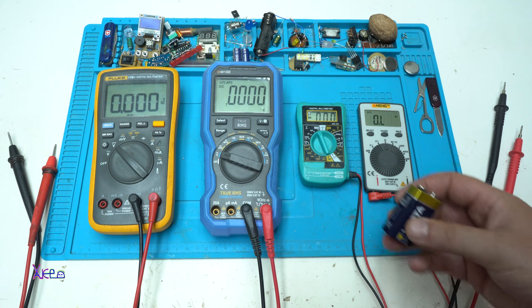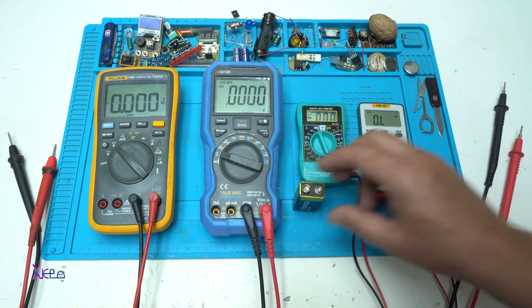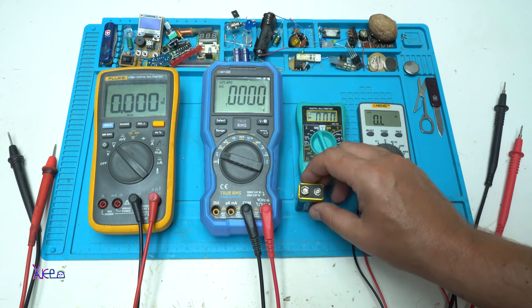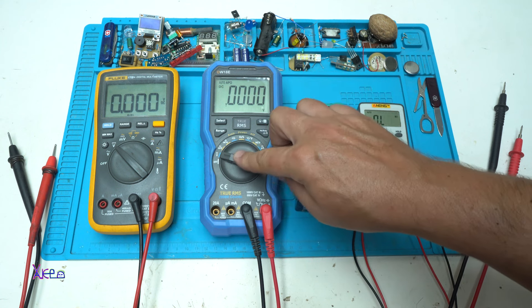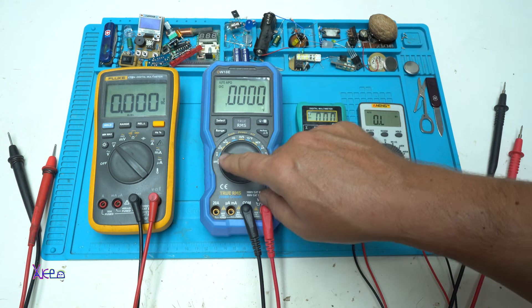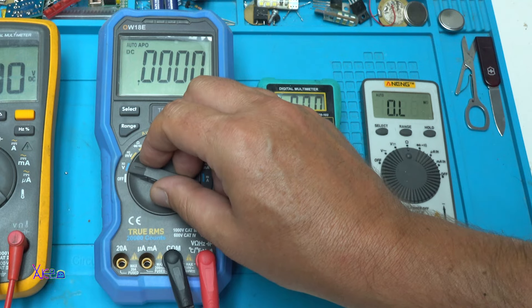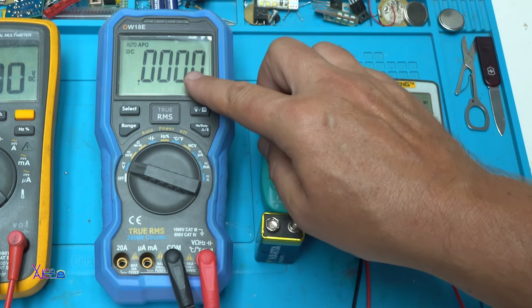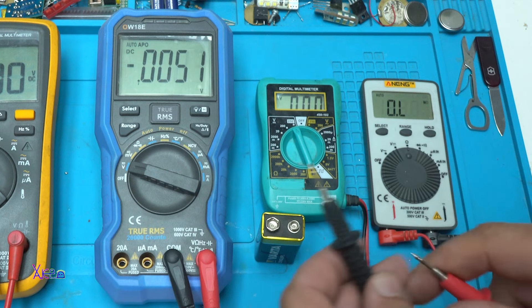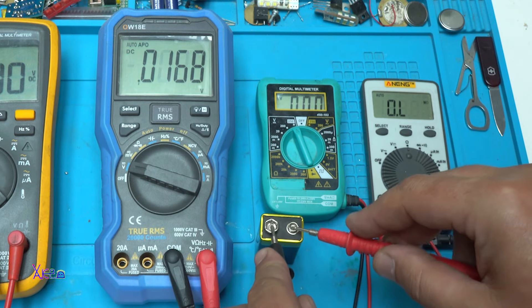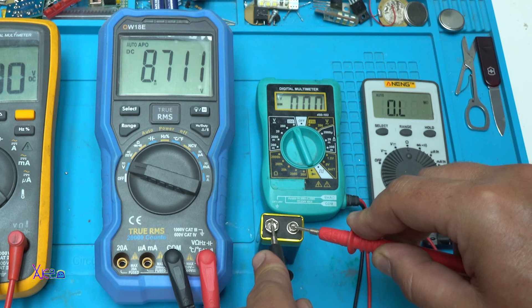Now I'm going to show you simple testing of this 9V battery. You need to select on voltage and manually select AC or DC voltage. This one has auto select. And it shows that have 8.7 volts.